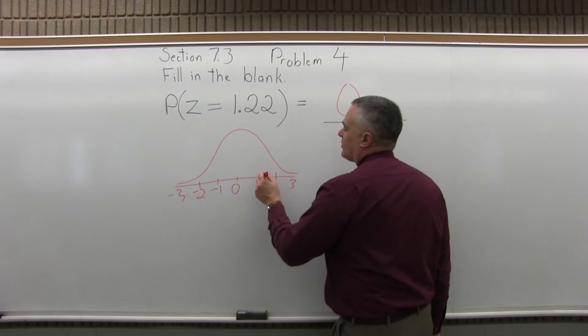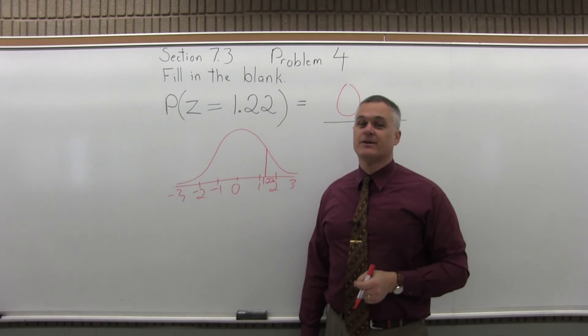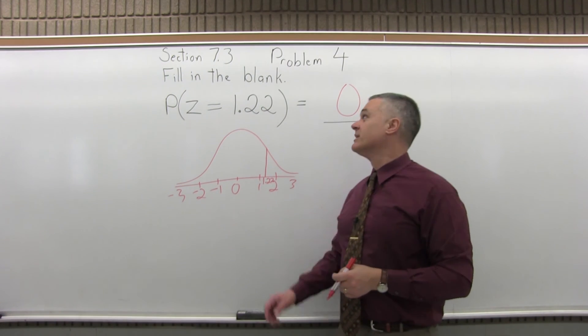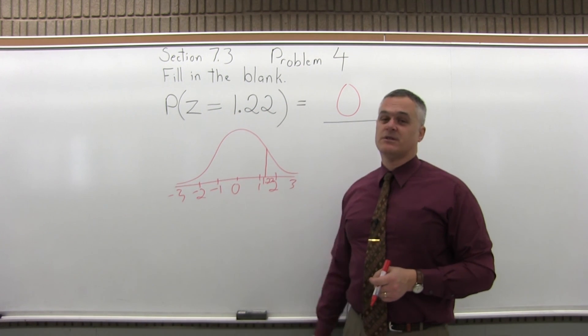So equal to 1.22 is just the line with no width. If it has no width, it has no area. No area means no probability. The probability that it's exactly equal to 1.22 is a probability of 0.